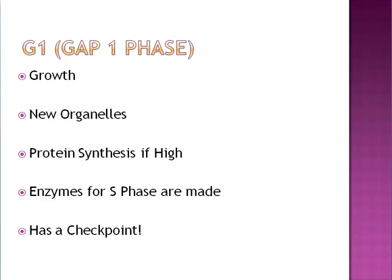It's a cell doing what a cell normally does — the daily life of a liver cell, a heart cell (which actually stays in this phase), or the daily life of any cell, like a skin cell going through its normal daily functions. Protein synthesis is high during this time, and the proteins produced vary from cell type to cell type. New organelles such as ribosomes are being produced, and it's during this phase that you make the enzymes and proteins needed for the synthesis phase — so you're making the stuff needed for the very next step.